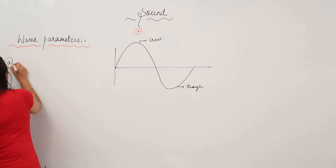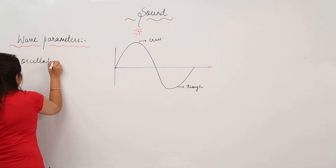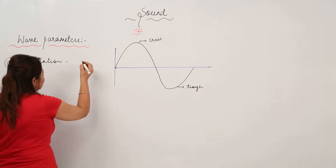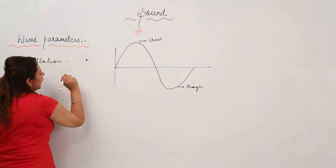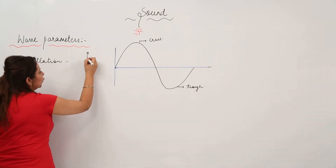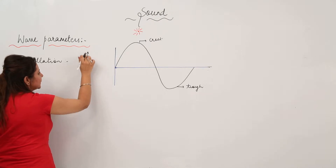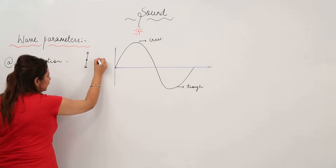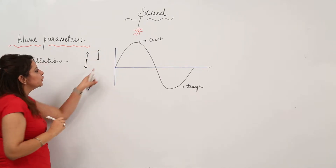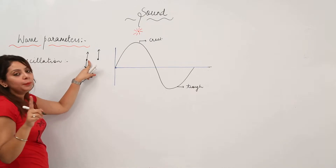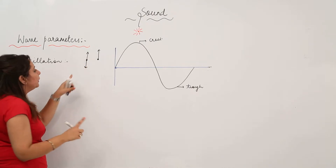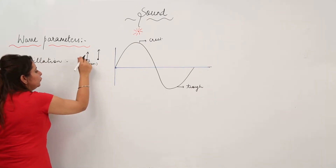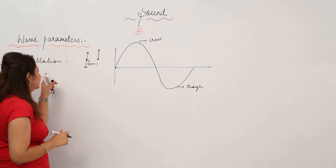The first one is oscillation. What is oscillation? Suppose I have a particle and it vibrates up and down — whenever a particle vibrates up and down, it completes one oscillation. But if a particle vibrates only in the upward direction, this is not an oscillation. Oscillation is a complete movement of a particle about its mean position.